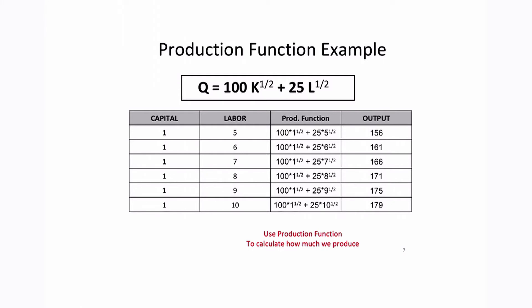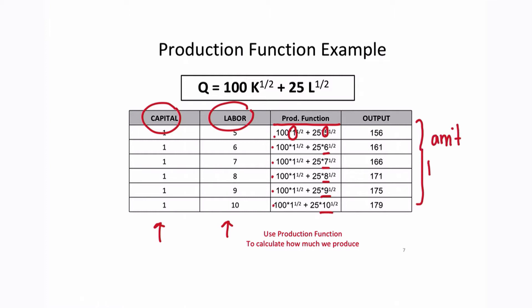We plug our capital and labor into our production function. We have one machine and five workers, and we keep capital constant all the way down but allow labor to change based on the number of workers. When we plug in our inputs — capital and labor — into our production function, we get the following output, which is the amount the firm is producing.